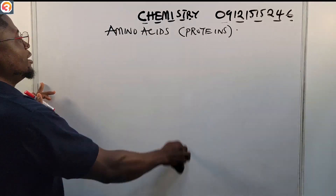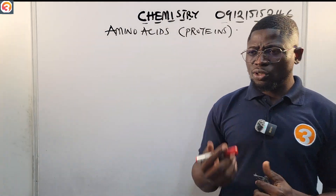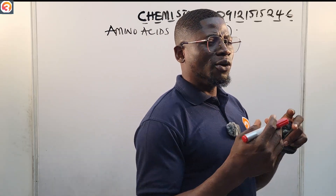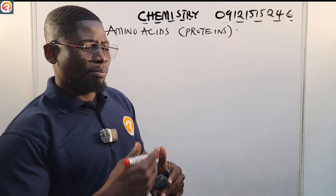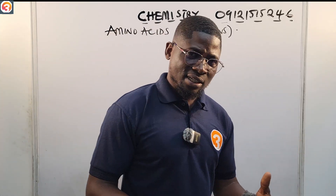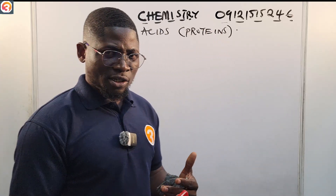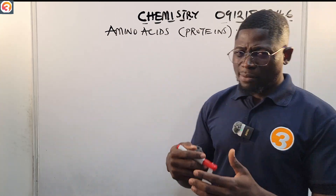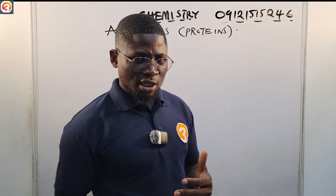Now, amino acids are the monomers of proteins. Proteins are polymers that are built up from amino acids, so amino acids are the building blocks of protein — proteins are the polymer units while amino acids are the monomer units.